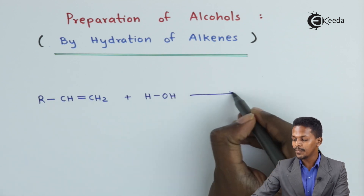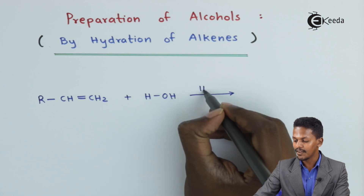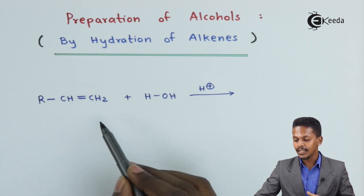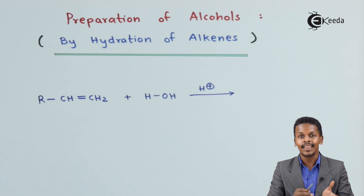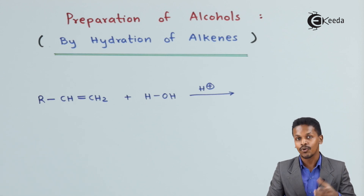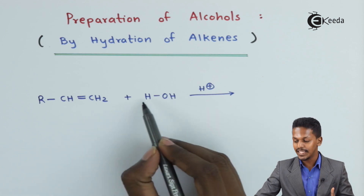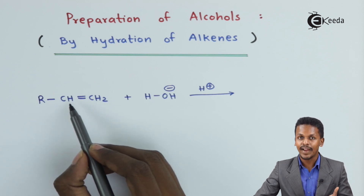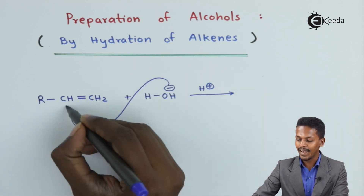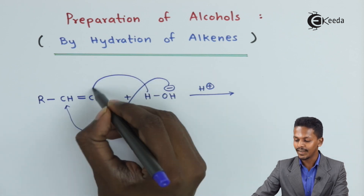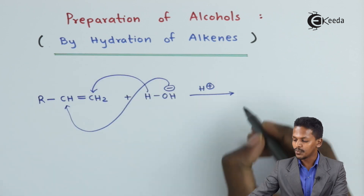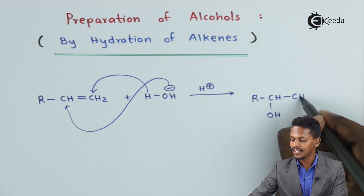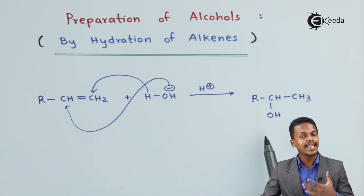This reaction will only proceed in the presence of an acid, H⁺ — we could consider H2SO4. The reaction proceeds such that we obtain an alcohol according to the Markovnikov rule. The negative part of the reagent, OH, will attack the carbon-carbon double bond which has fewer hydrogen atoms. So OH attaches to that carbon and H attaches to the other carbon, making the product RCHOH-CH3 — a secondary alcohol.